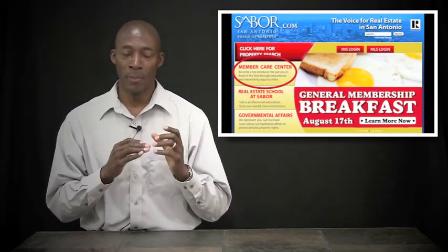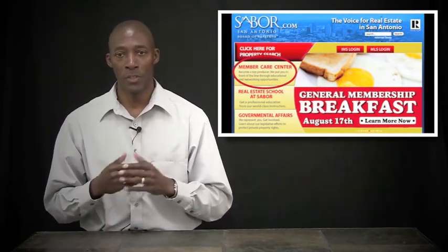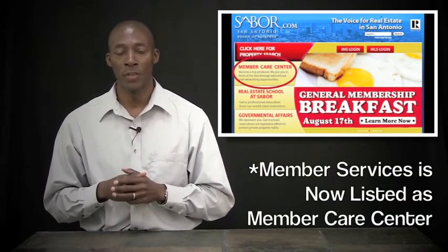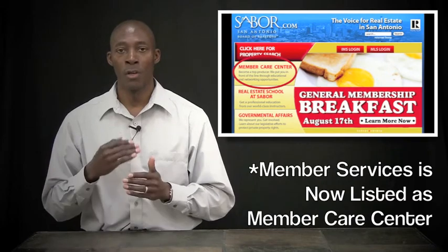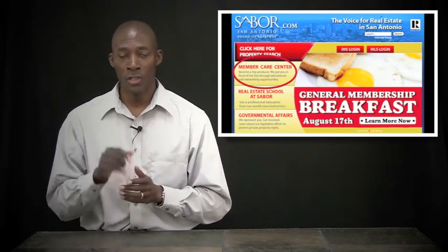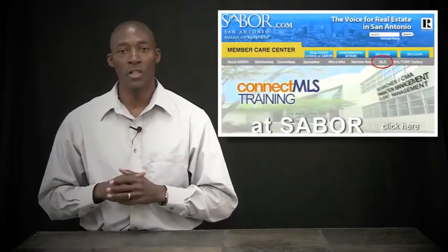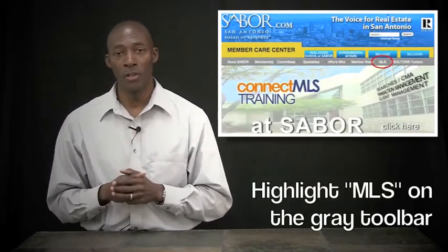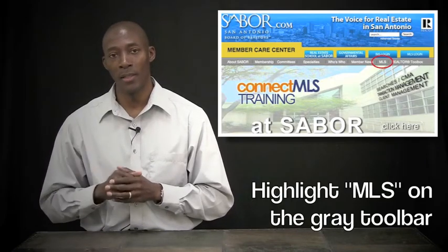You'll see a red box in the left-hand corner that says Property Search. Below that box, you'll see a box that says Member Services. You're going to click in the box that says Member Services. Once you click in that box, you're going to see a gray toolbar go across the screen. You're going to follow that gray toolbar across until you see MLS.